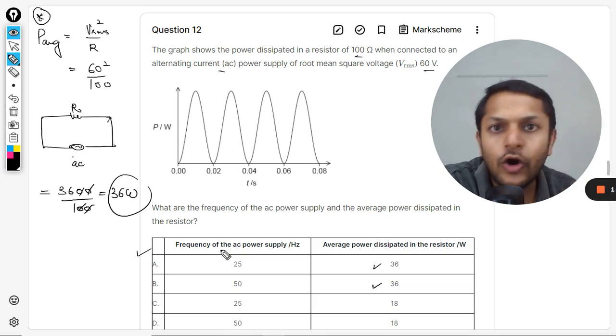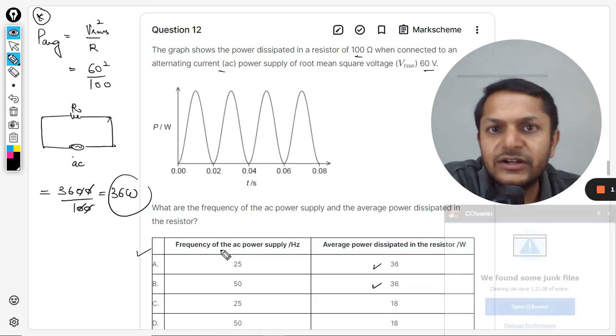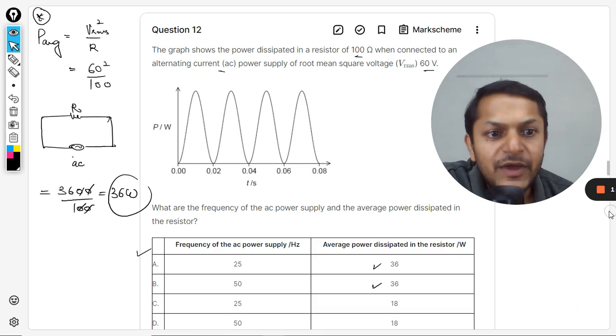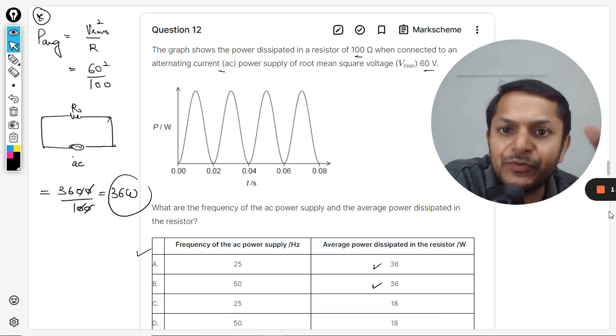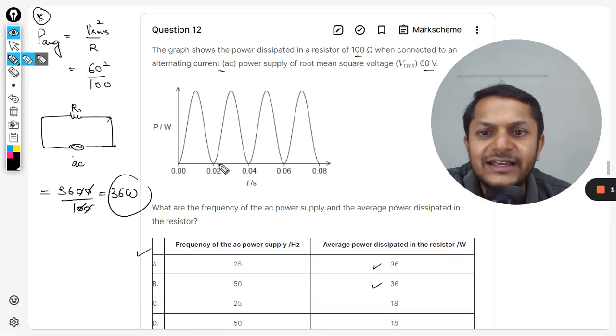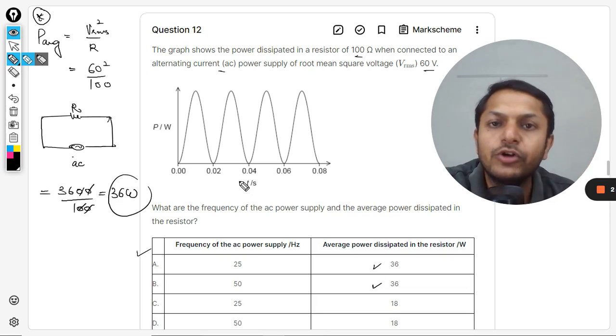So when you're talking about energy, the variation of this energy and the variation of power will be the same. So clearly even in that case, the frequency was double in the case of energy.